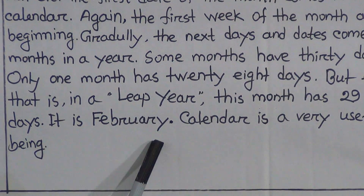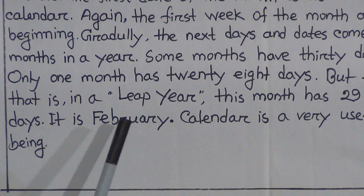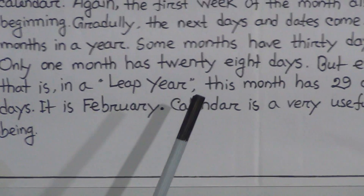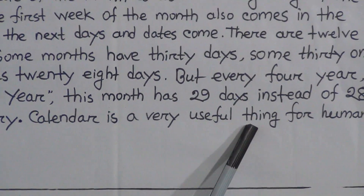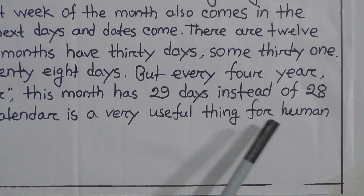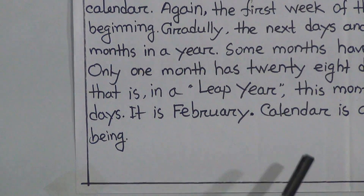It is February. In a leap year, February has 29 days instead of 28. Calendar is a very useful thing for human beings.